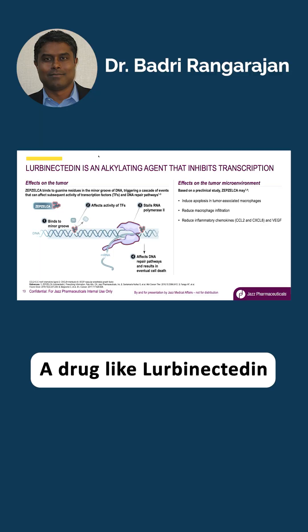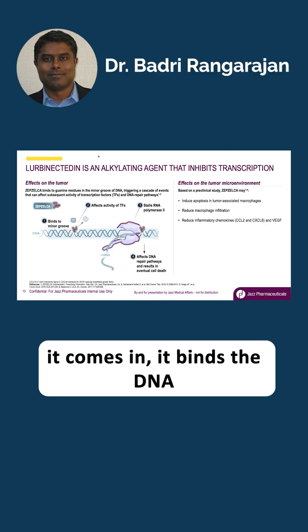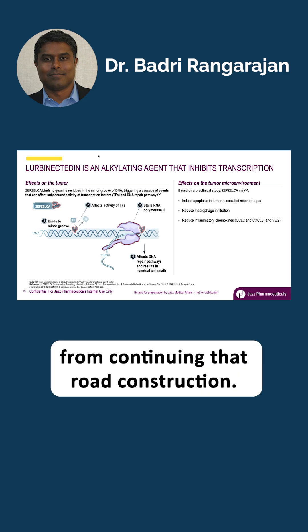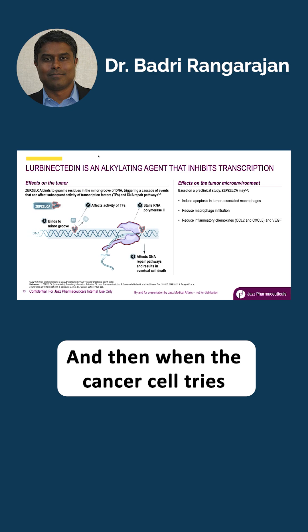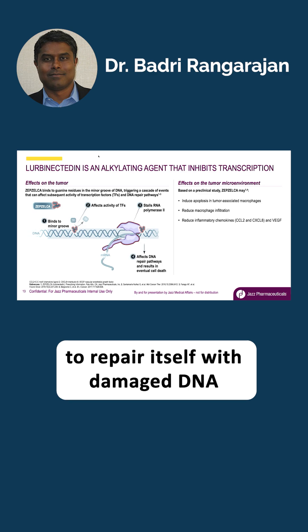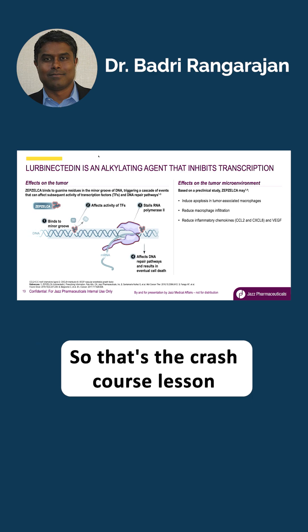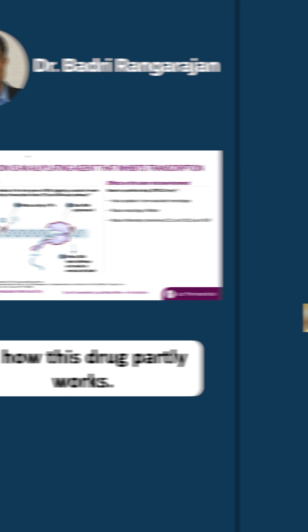So a drug like lorbanectin comes in, it binds the DNA and kind of blocks the enzymes from continuing that road construction. And then when the cancer cell tries to repair itself with damages in DNA, the drug interferes with that. So that's the crash course lesson in how this drug partly works.